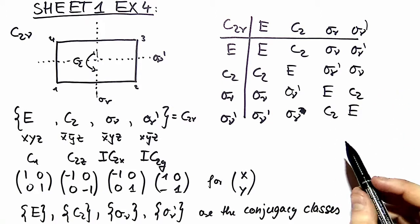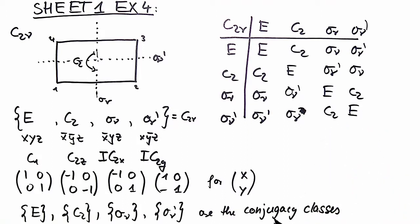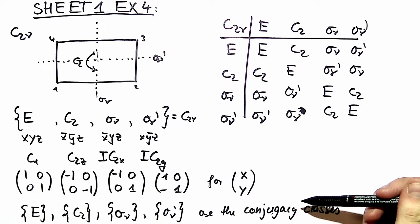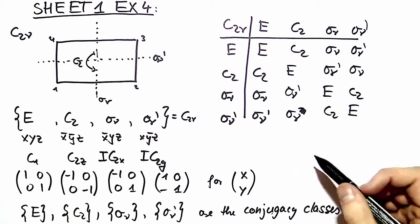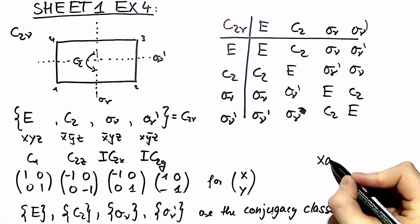One last remark. Finding the conjugacy classes was very easy because the rules were quite obvious. But we could have seen that also from the matrix representation. Because the conjugacy classes represent matrix similarity from what you know from linear algebra.